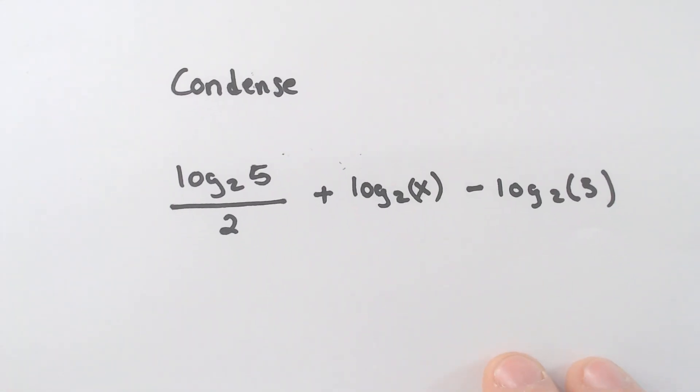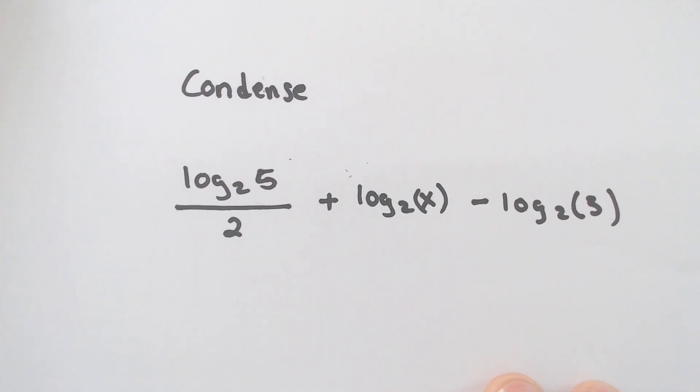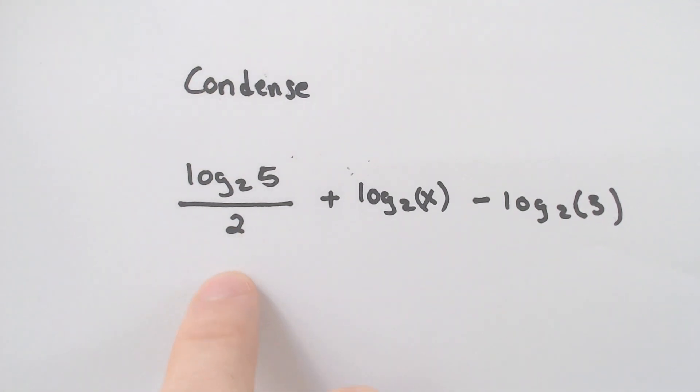Condense this one. Last one. First off, minus. So we're going to end up dividing by the 3. A lot of people might think that this is already condensed, this 2 divided by 2. But notice how it's not 5 over 2. It's the entire log divided by 2, which is a trick.